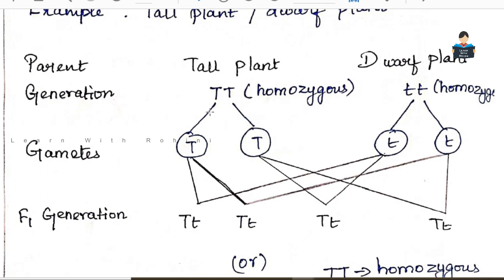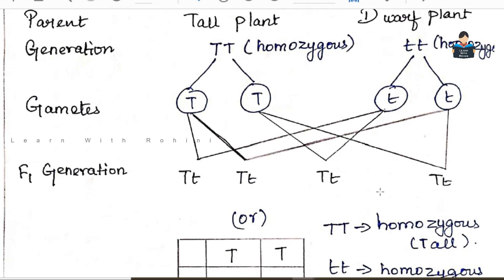How do the contrasting genes separate? They separate during gamete formation — this is the law of segregation. Each plant produces gametes: one gamete carries Capital T and the other carries small t. When combined, the zygote formed is Capital T, small t. So in the F1 generation, all plants are tall and heterozygous.